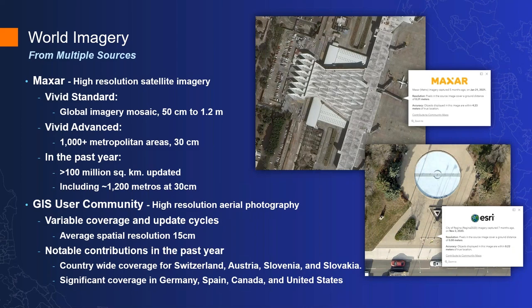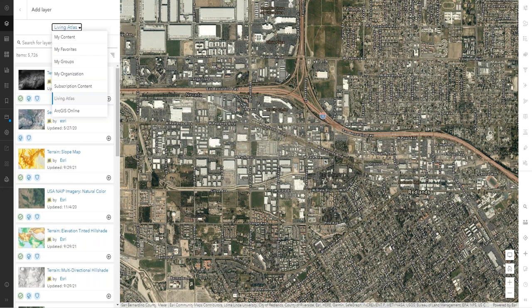World Imagery content comes from multiple sources. A lot comes from Maxar, providing what they call Vivid Standard data — global data at 50 centimeters to 1.2-meter resolution. We also have Vivid Advanced data covering thousands of metropolitan areas at 30 centimeters. In the last year, we've updated that with over a million square kilometers of new imagery, including about 1,200 different metro areas. The average resolution for community contributions goes down to about 15-centimeter resolution, making it fantastic basemap imagery.